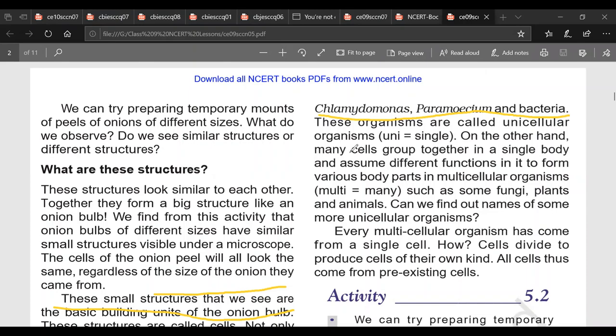On the other hand many cells group together in a single body, assume different functions in it to form various body parts in multicellular organisms. So examples of multicellular organisms are fungi, plant and animals. So this is about unicellular versus multicellular.